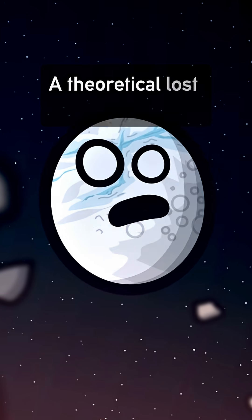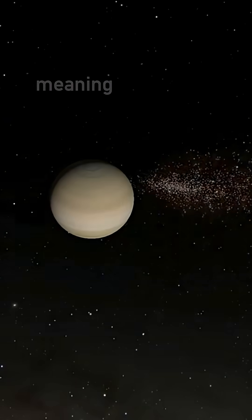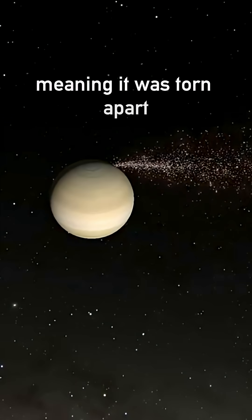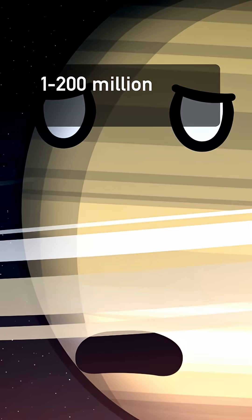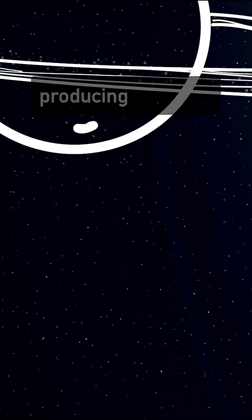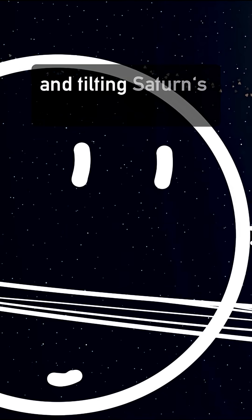A theoretical lost moon named Chrysalis is even suspected to be one of those moons. Meaning, it was torn apart one to two hundred million years ago, producing the rings and tilting Saturn's axis.